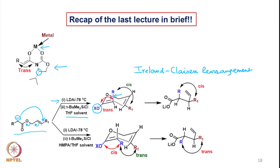If we keep everything else the same but add HMPA — hexamethylphosphoric triamide, which has the structure (Me₂N)₃P=O — this solvent has three nitrogens that play a very crucial role. In that situation, the OX group and the R group are cis to each other. Since the geometry of the enolate has been achieved by different conditions, they lead to different products: the R and R1 groups are cis in one case and trans in the other. The newly generated asymmetric centers are highly influenced by the geometry of the enolate.